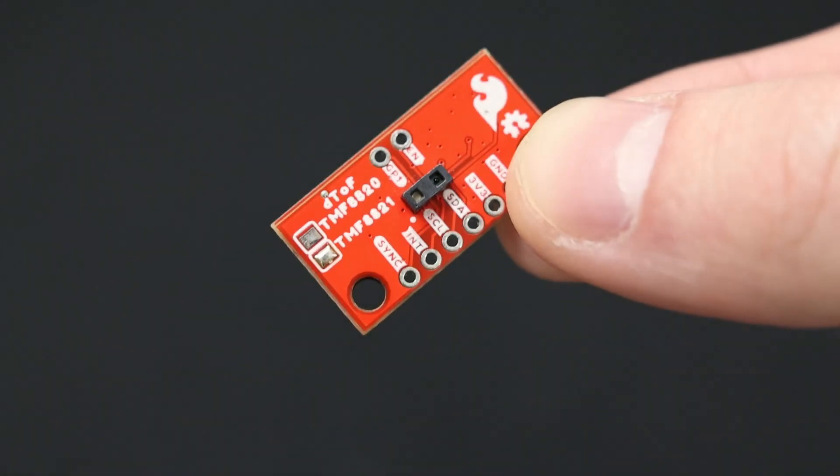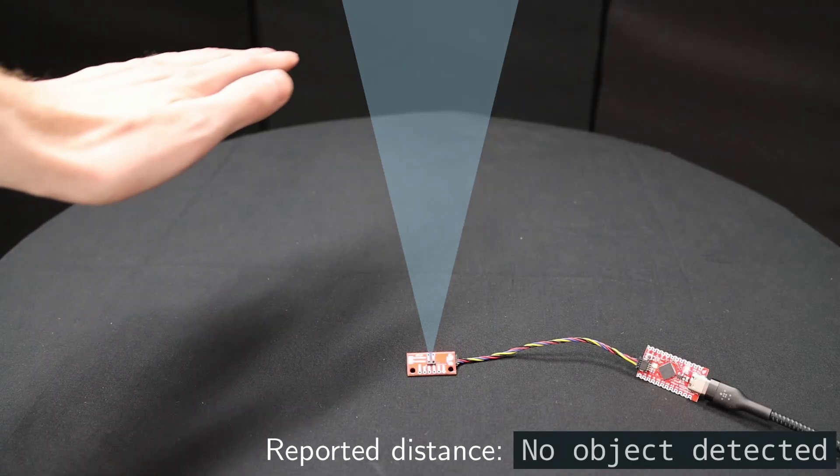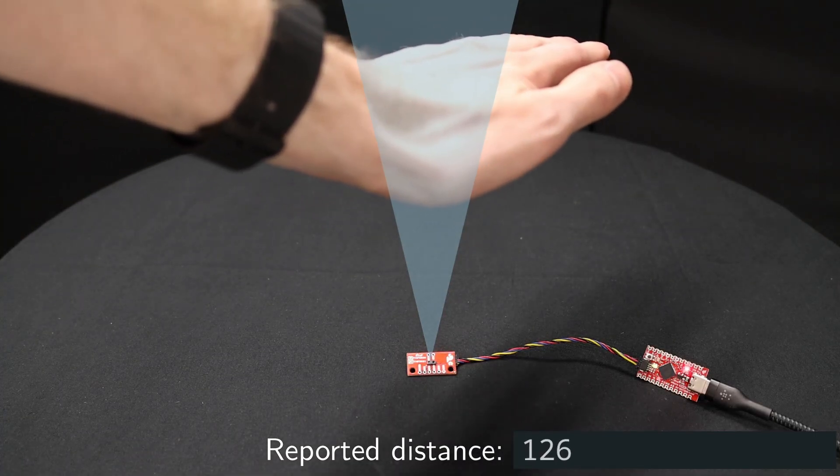This is a time-of-flight distance sensor. It has a wide field of view and is typically used to sense the distance to objects in that field of view.